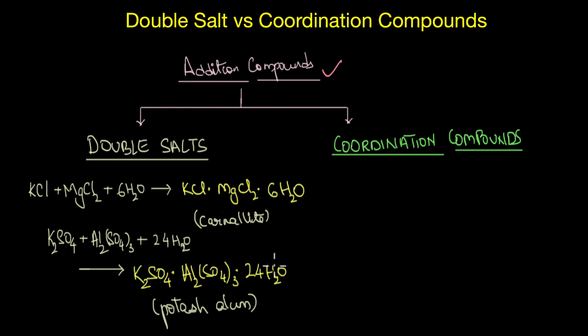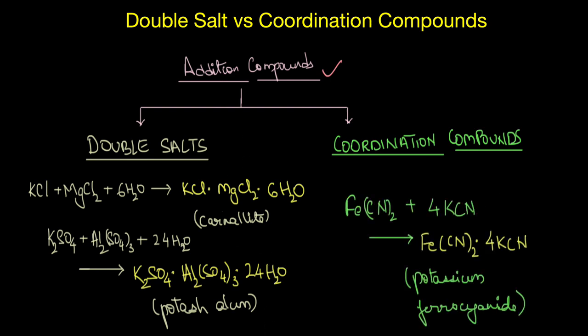On the other hand, here we have a typical coordination compound, which is potassium ferrocyanate. The familiar format of this would be K4Fe(CN)6.